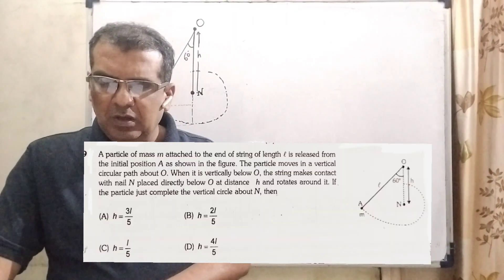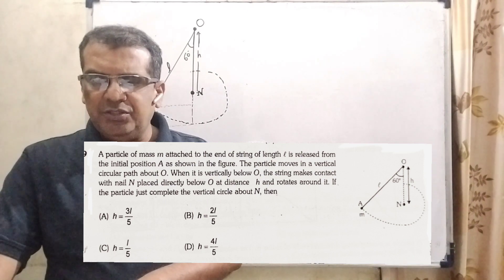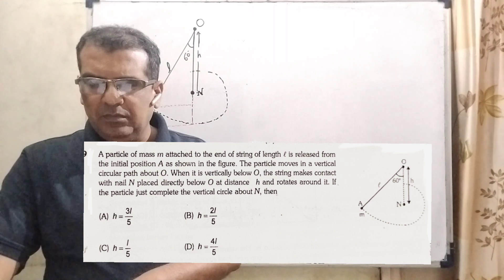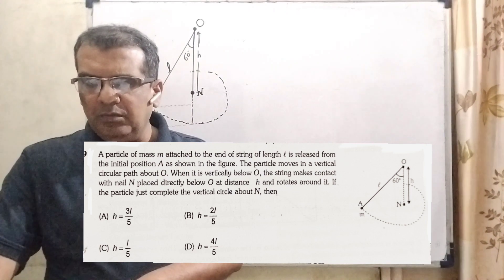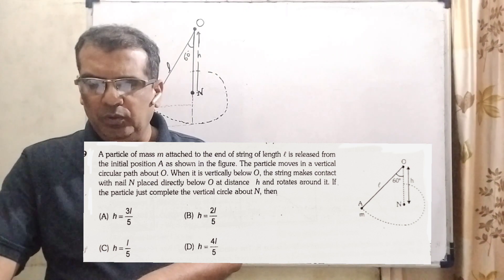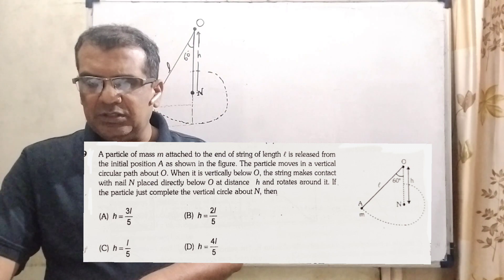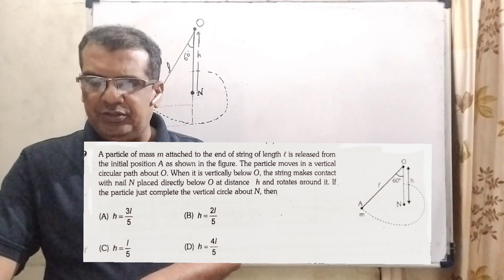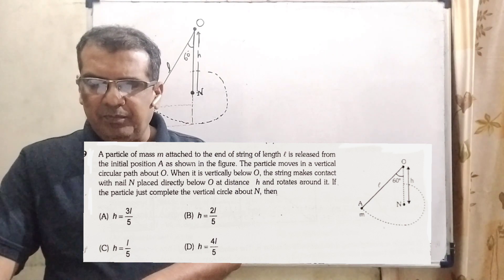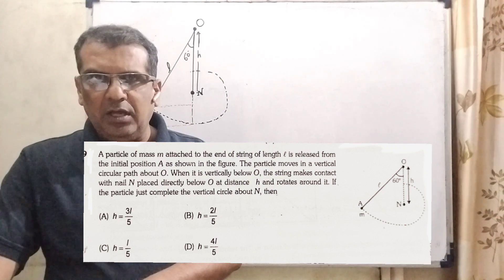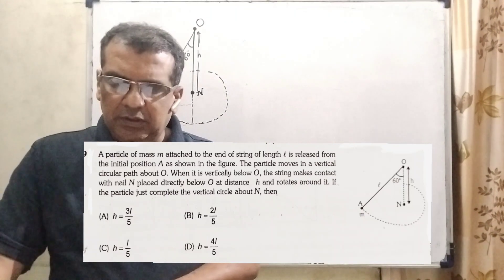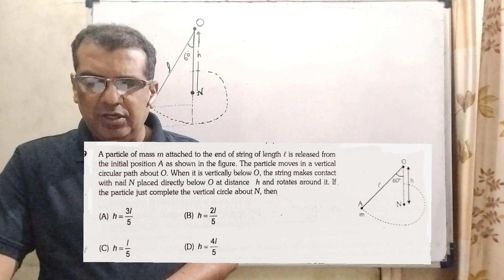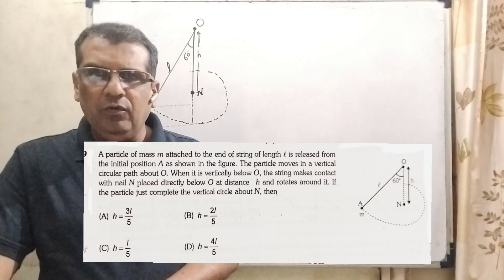Now here is the question. A particle of mass m attached to the end of a string of length l is released from the initial position A, as shown in the figure. The particle moves in a vertical circular path about O. When it is vertically below O, the string makes contact with a nail placed directly below O at distance h and rotates around it. If the particle just completes the vertical circle about the nail, we have four options: Option A: H = 3l/5, Option B: H = 2l/5, Option C: H = l/5, Option D: H = 4l/5.